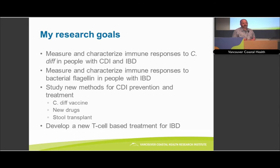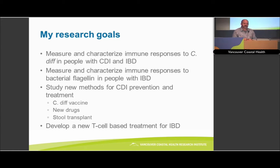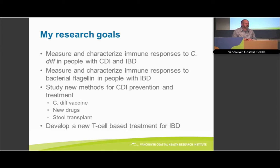Flagellin is a protein that bacteria make to swim. It's recognized by the immune system as a way to tell when bacteria are present where they're not supposed to be. It's also an important target of antibodies, specifically in people with Crohn's disease. About half of people with Crohn's disease have antibodies to bacterial flagellins — you don't see those same levels in people with ulcerative colitis or without IBD. We're gearing up now to start recruiting more volunteers to give blood to see what these responses look like.